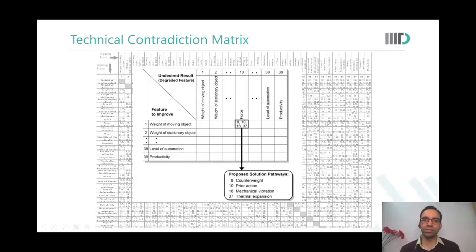Identify the features which are in conflict with each other. We go to that particular box and we identify the inventor principles and then we brainstorm around those inventor principles.